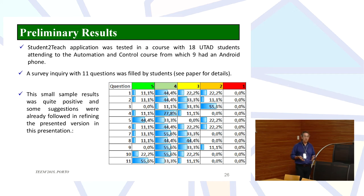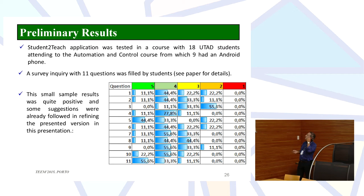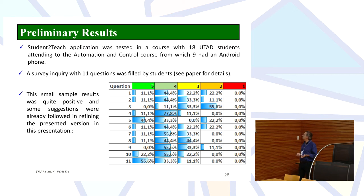This was done in a very short period. Diogo finished the applications and we applied a questionnaire to an automation and control course with 18 students. However, only nine had Android-based phones, so it is a very small and non-significant sample. Those nine students answered 11 questions. Based on this small sample the feedback was quite good — students liked the applications.